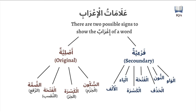But sometimes I'rab does not happen with the original signs. Instead, it occurs with A'lamat Al-Far'iyya — the secondary signs — such as an Alif, a Ya, a Kasra, a Fatha in certain scenarios, a Waw, or a Nun.